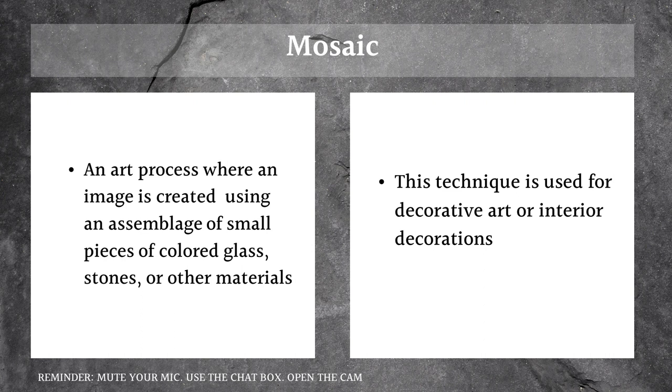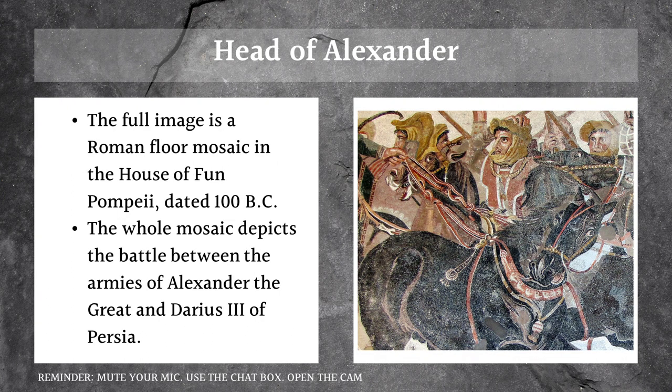The Romans are also well known for mosaic — an art process where an image is created using an assemblage of small pieces of colored glass, stones, and other materials, used for decorative art or interior decorations. One of the most popular mosaics from the ancient Roman period is the Head of Alexander, a Roman floor mosaic in the House of the Faun, dated 100 B.C.